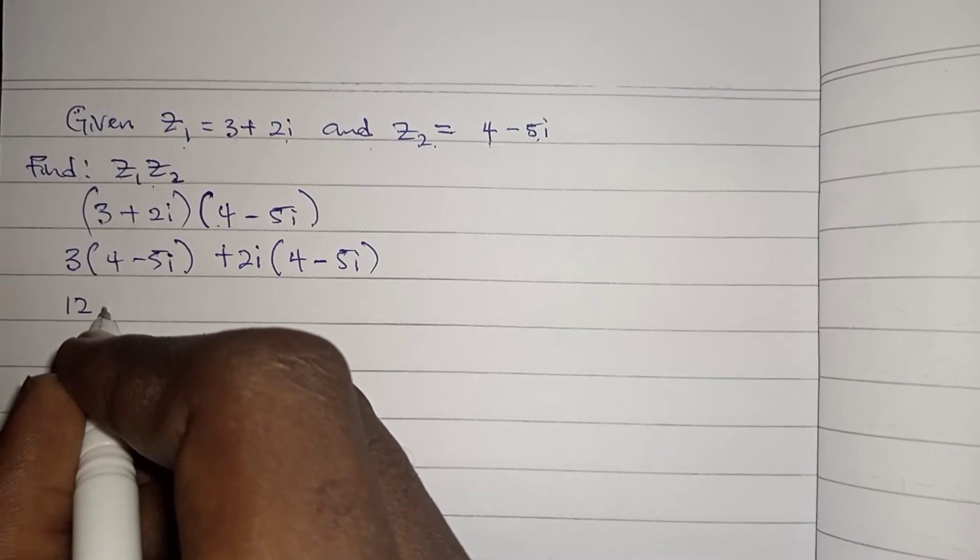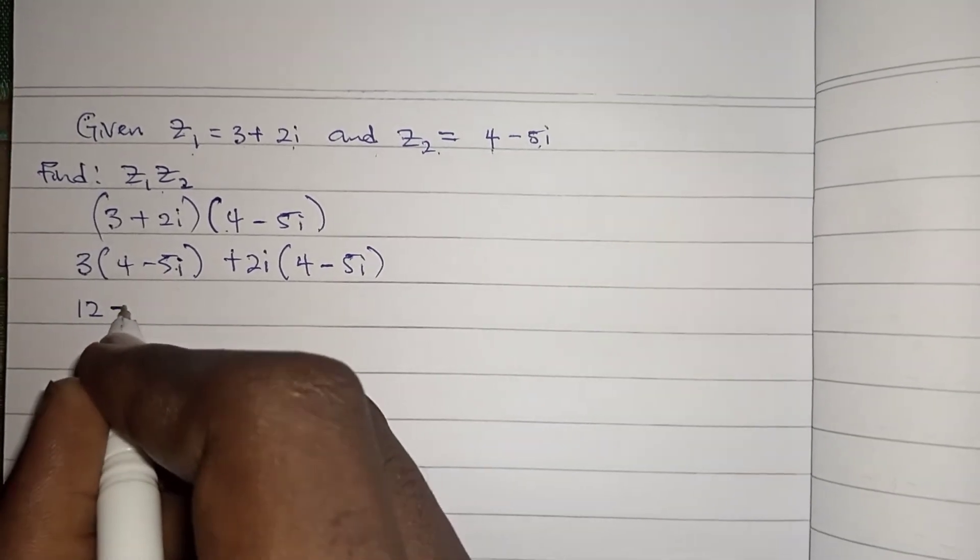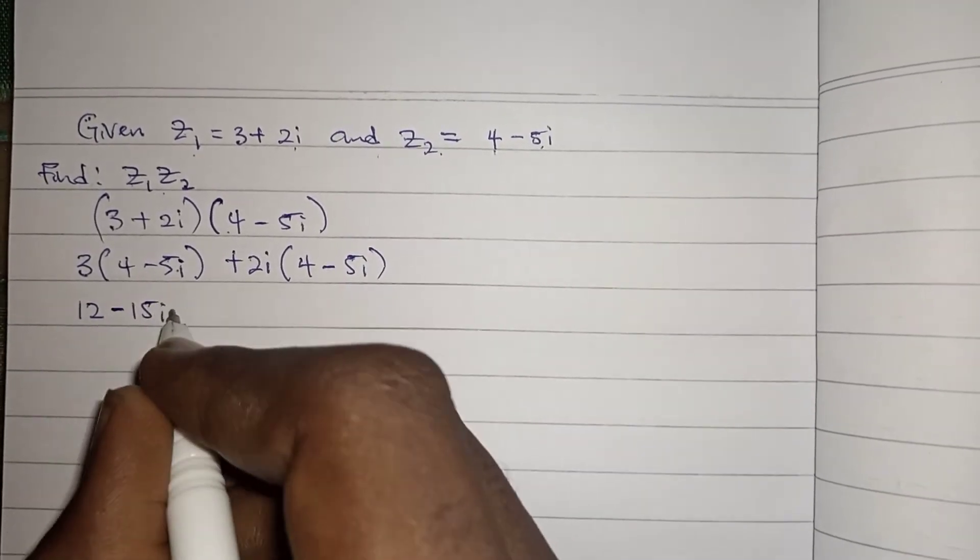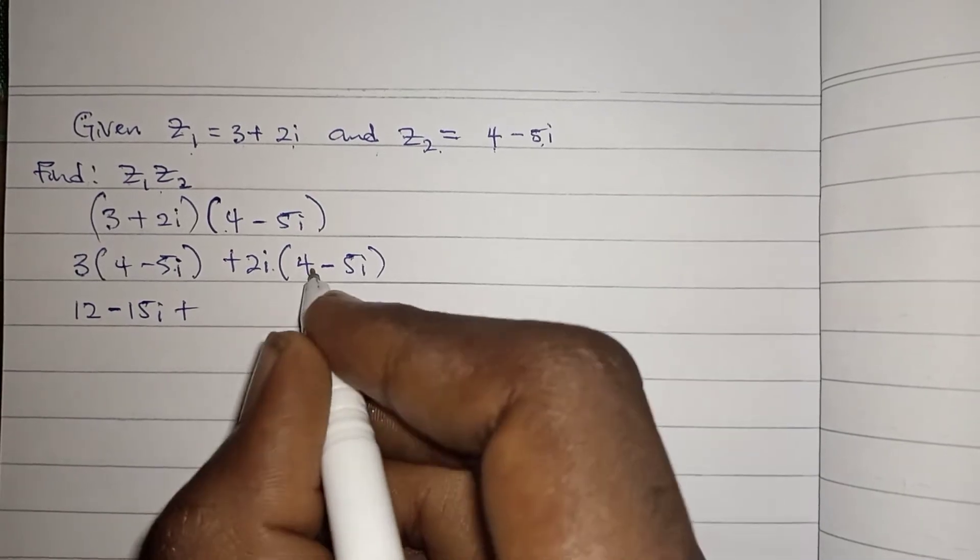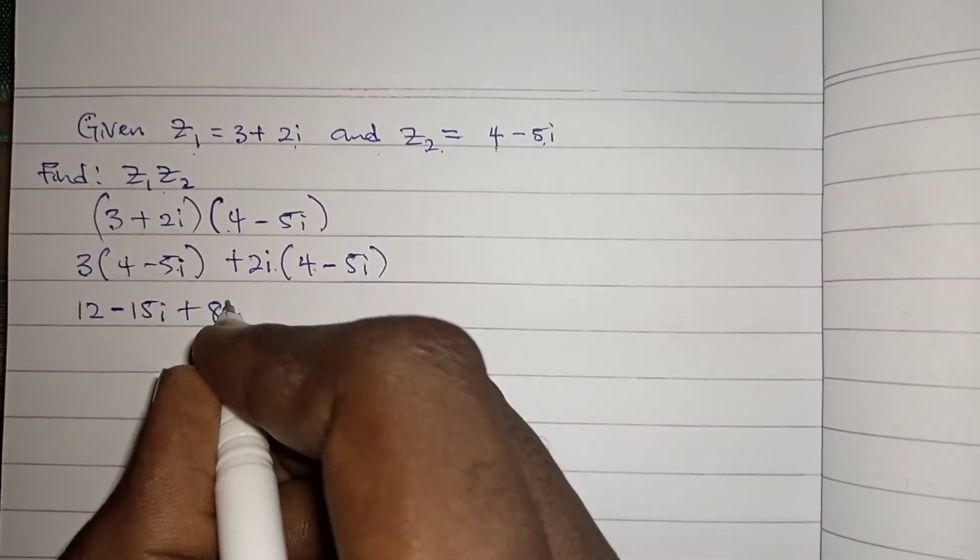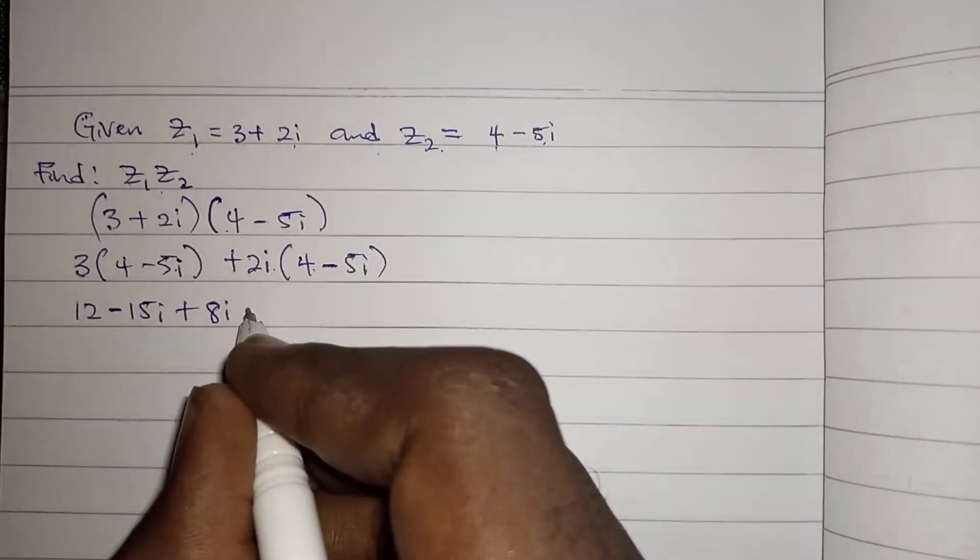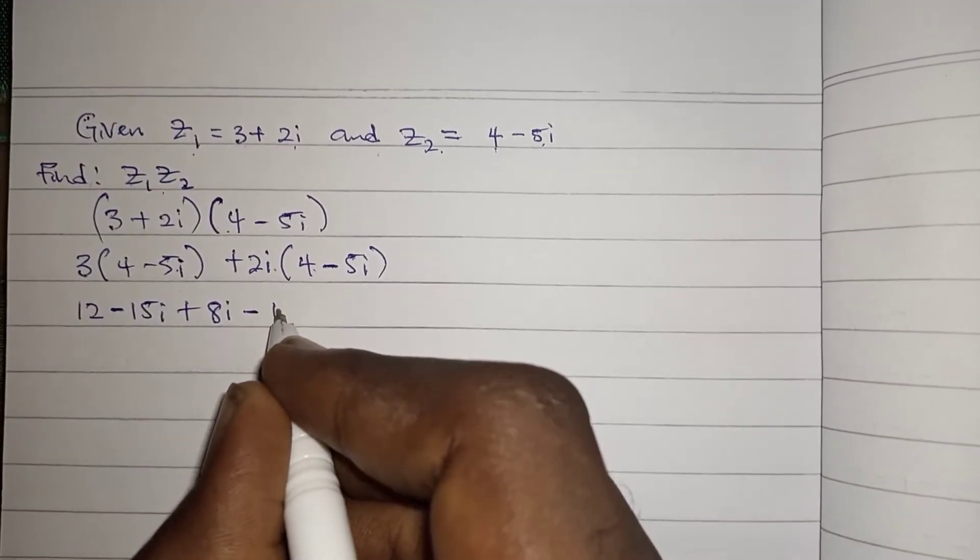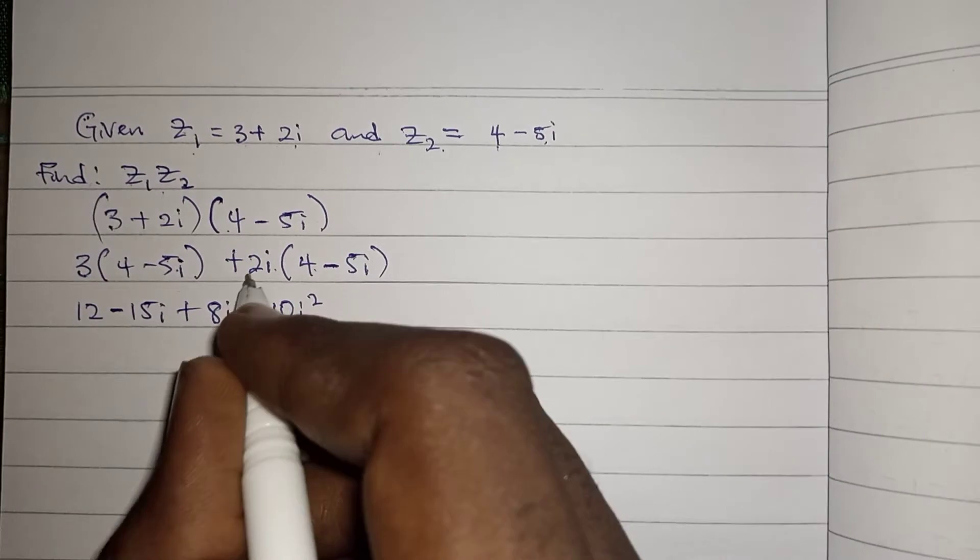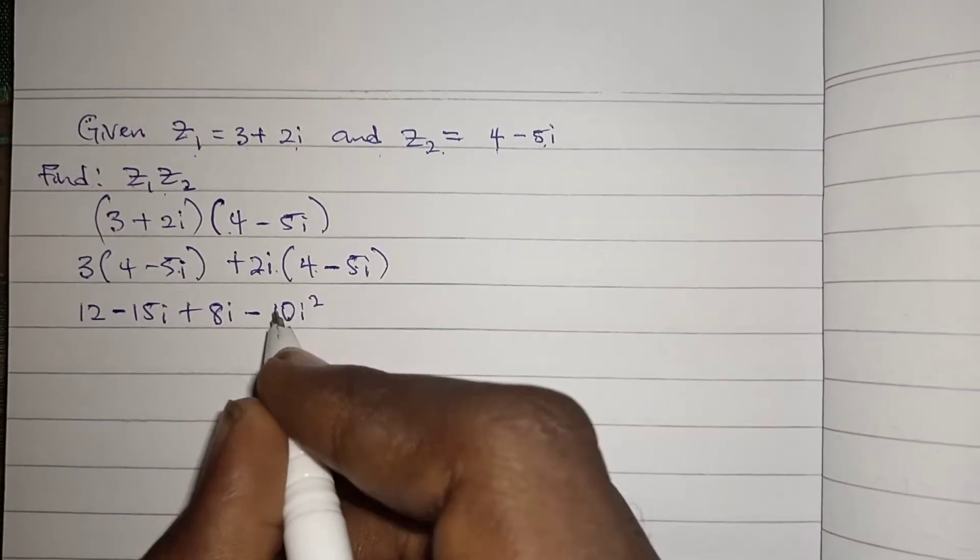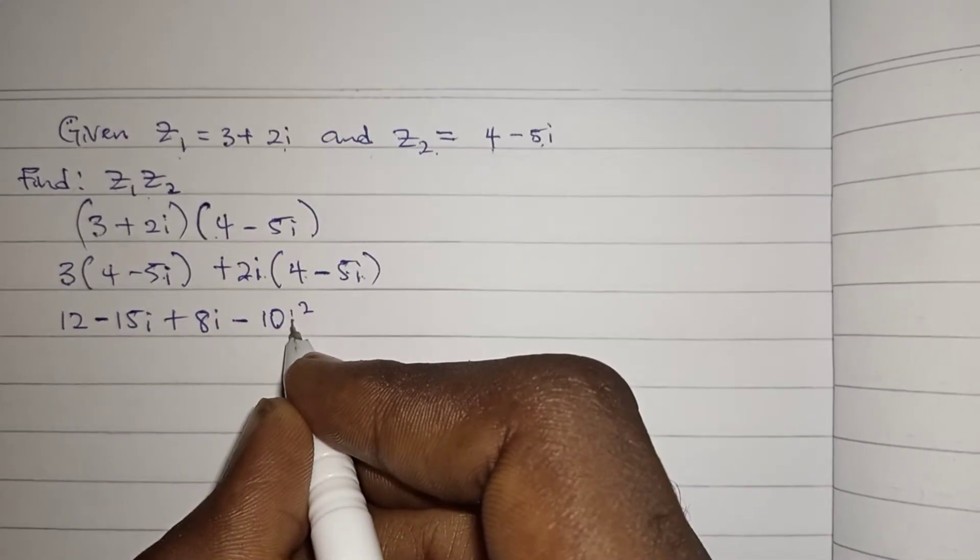Now opening bracket we have 3 times 4 gives us 12, 3 times minus 5 gives us minus 15i, plus 2i times 4 gives us 8i, 2i times minus 5i gives us minus 10i squared. So 2 times 5 gives us 10, then i times i gives us i squared.